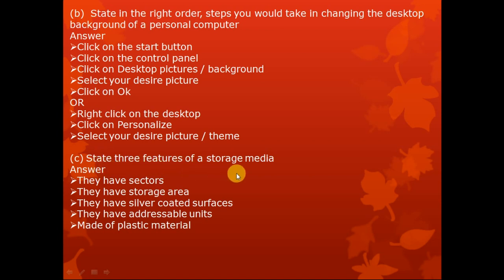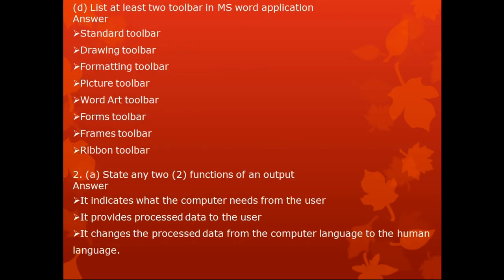Features of a storage media include: sectors, storage area, silver-coated surfaces, addressable units, and they are made of plastic materials. Take note of these features in case you meet them in exams. Toolbars in MS Word include: the standard toolbar, drawing toolbar, formatting toolbar, picture toolbar, WordArt toolbar, form toolbar, frames toolbar, and ribbon toolbar.